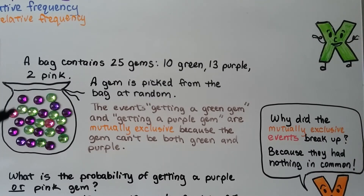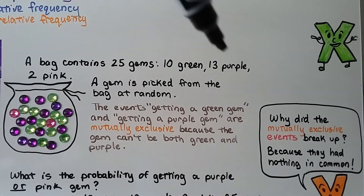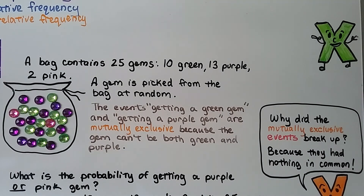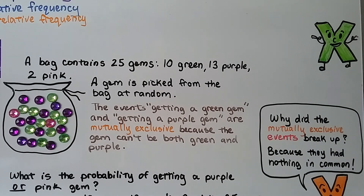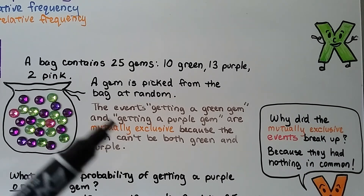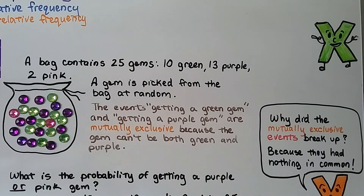Here we have a bag containing twenty-five gems: ten green, thirteen purple, and only two pink. A gem is picked from the bag at random — just one gem. The events getting a green gem and getting a purple gem are mutually exclusive because the gem can't be both green and purple; it's going to be either one or the other. So those are mutually exclusive events.